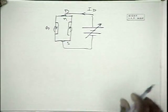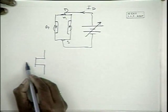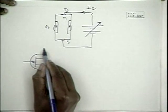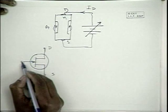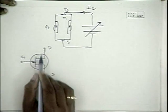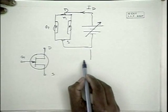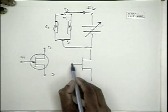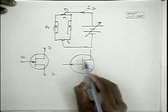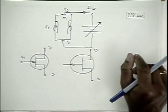Now let us look at the circuit symbol for FET. If it is an N channel FET, this is the circuit symbol used — this is the drain, this is the source, and this is the gate. This arrow into the channel indicates it is an N channel FET. On the other hand, if it is a P channel FET, the arrow is to the outside — this is the circuit symbol used.